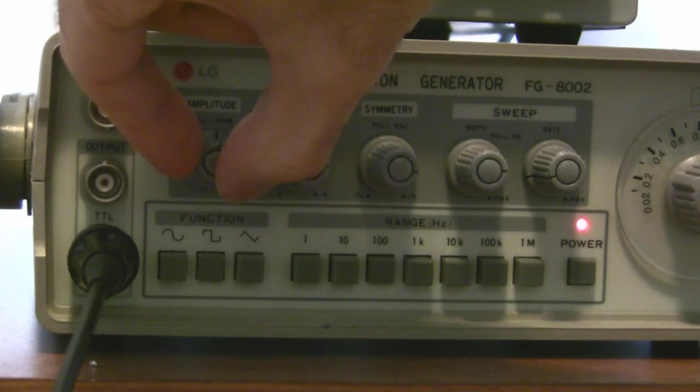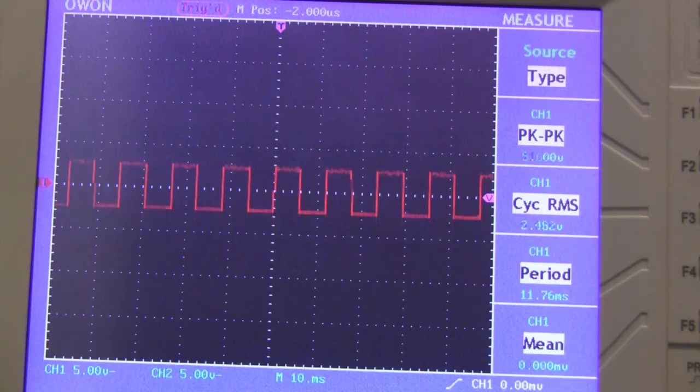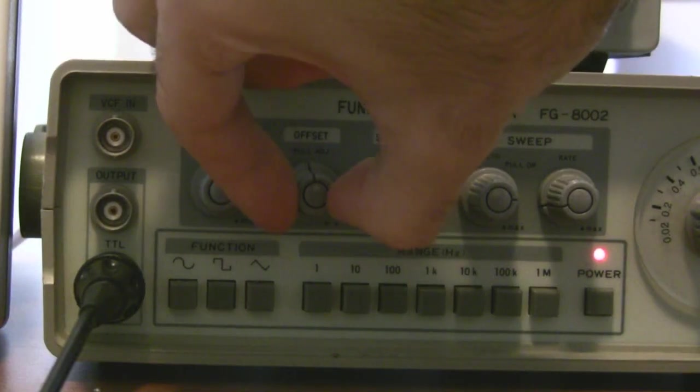You can also change the amplitude of the wave. And you can give it a DC offset like this.